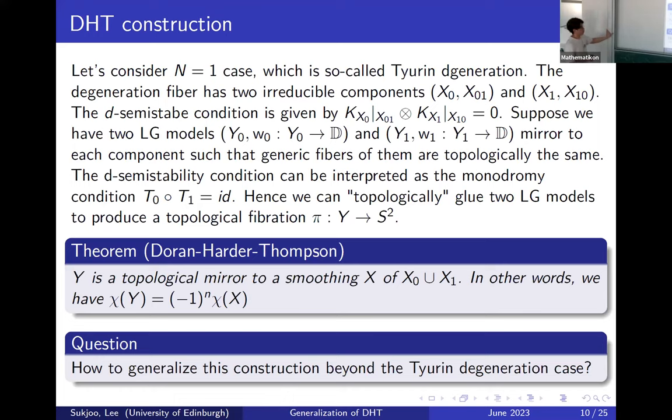Of course, they did more than this. If you're using a lot of numbers, you can do it in the type A_2 case and provide a bunch of evidence. The direction that I want to go is the following question: how to generalize this construction to higher type degenerations?